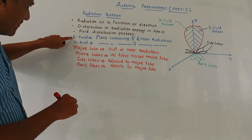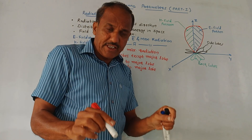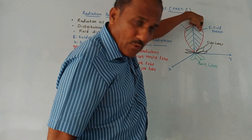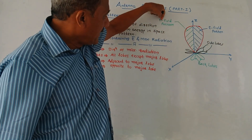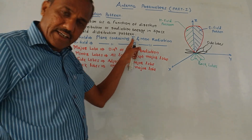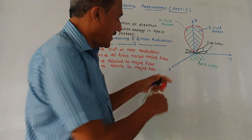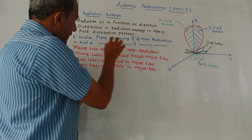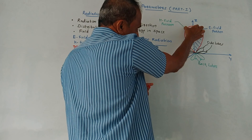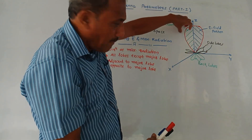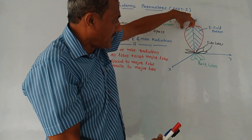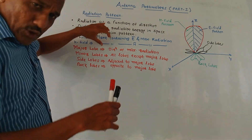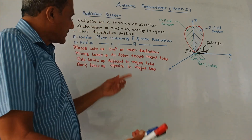There are two parts: E field and H field. E stands for electric field intensity and H stands for magnetic field intensity. The E field pattern is the plane containing E-bar (electric field intensity) and the direction of maximum radiation — shown with blue ink in the diagram. The H field pattern is the plane containing H-bar (magnetic field intensity) and maximum radiation. The Major Lobe is the lobe which shows the direction of maximum radiation.